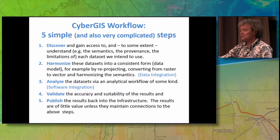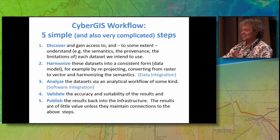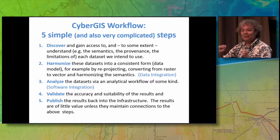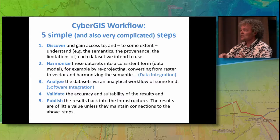The fourth problem is validation. With so much data available, we can mash up all kinds of things — it's even easier to make maps that are inaccurate and not worth sharing with the community. And the fifth challenge is to publish. This cycle of science isn't complete until the work is placed back where others can find it. So the challenges are: discover, harmonize, analyze, validate, and publish — each an unsolved problem in GI science.